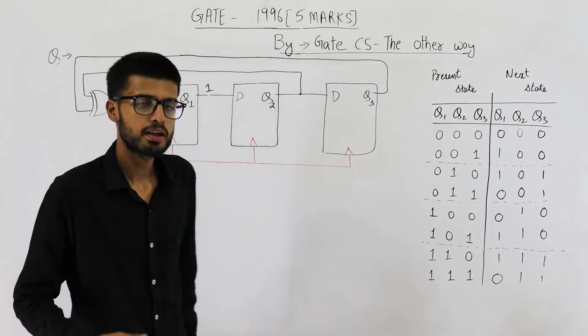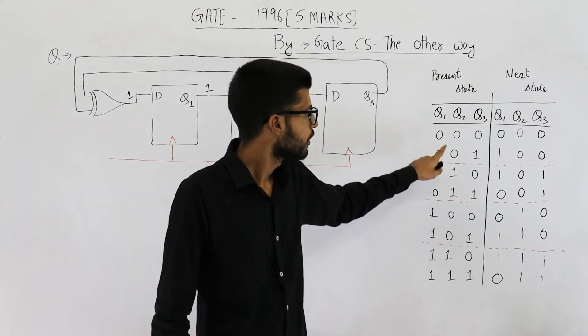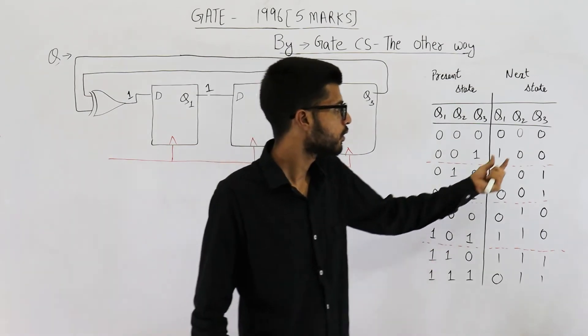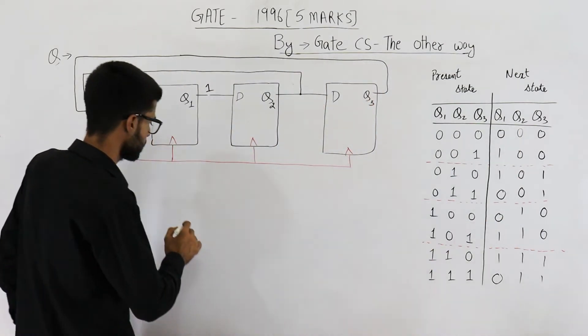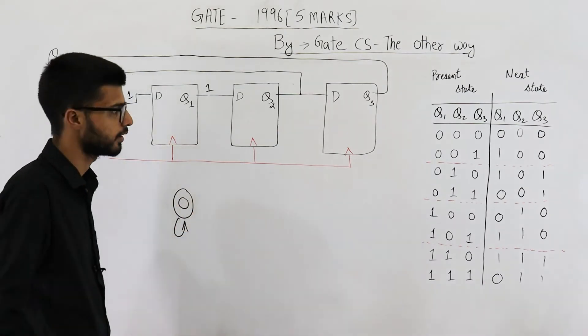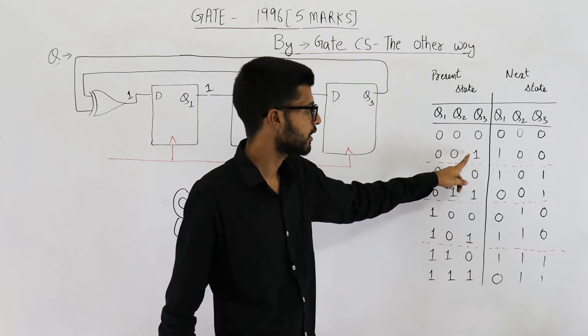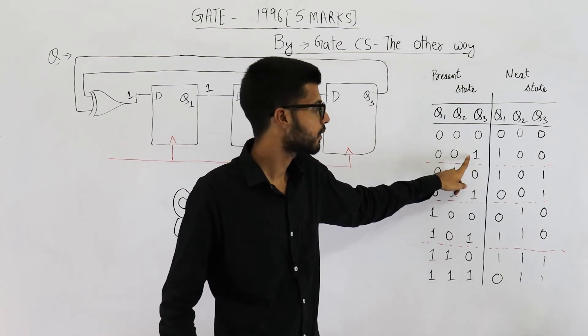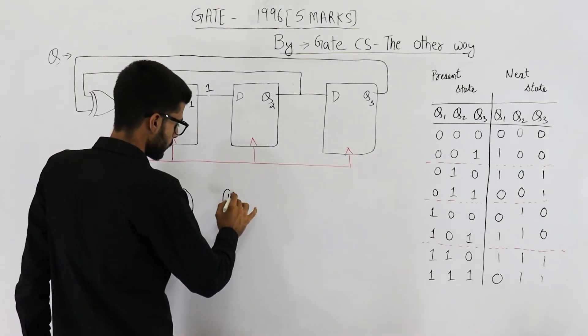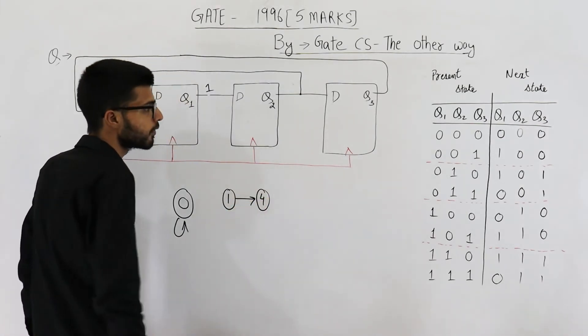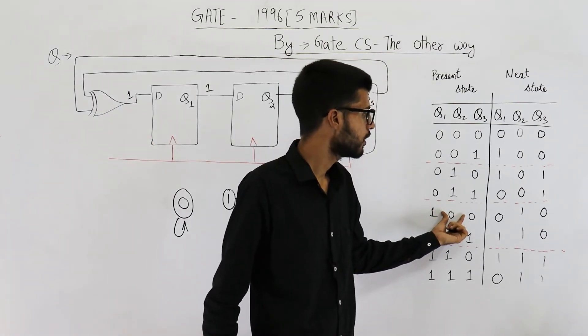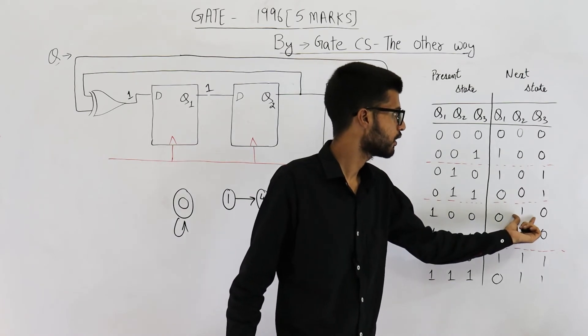So now let's just draw the counting sequence. You can see whenever the current state is 0, on seeing a clock, you will remain on this state only. That means state 0 goes to state 0 only. But whenever you are on state 1, on seeing a clock signal, you will go to state 4. So here we have state 4. Whenever the present state is 4, upon seeing a clock signal, you will go to 2.